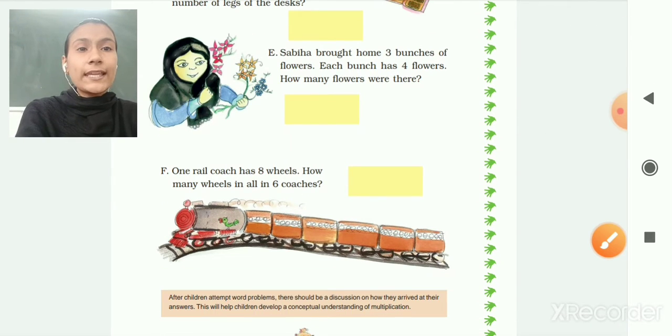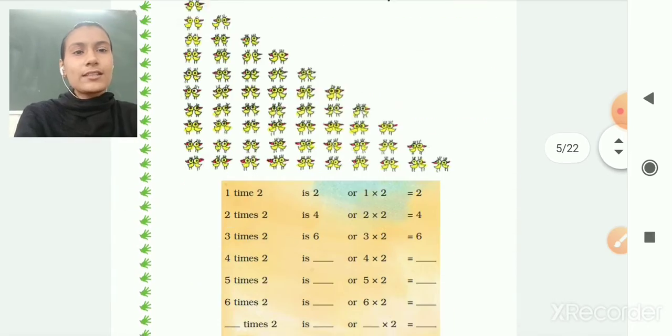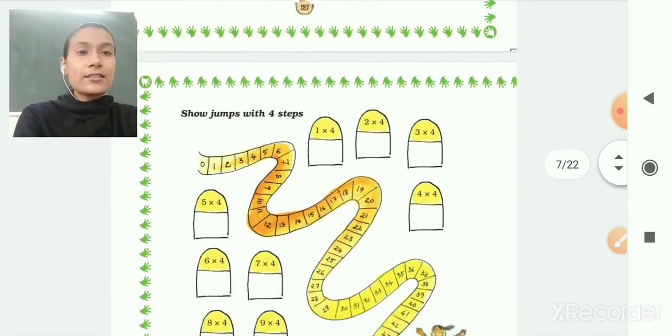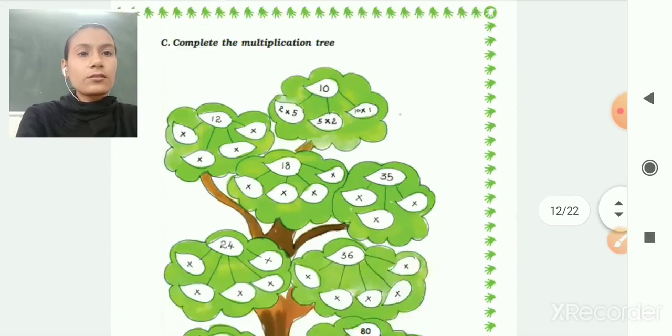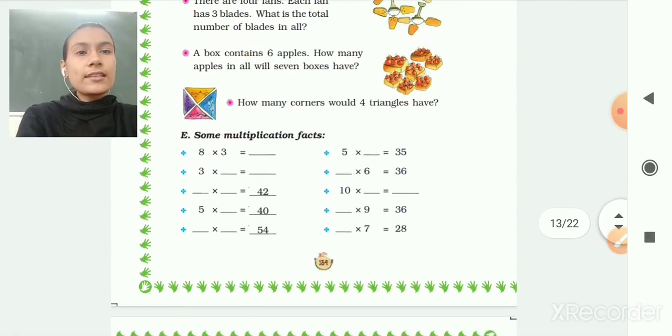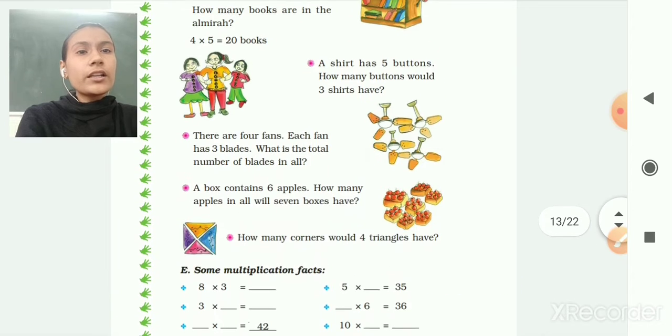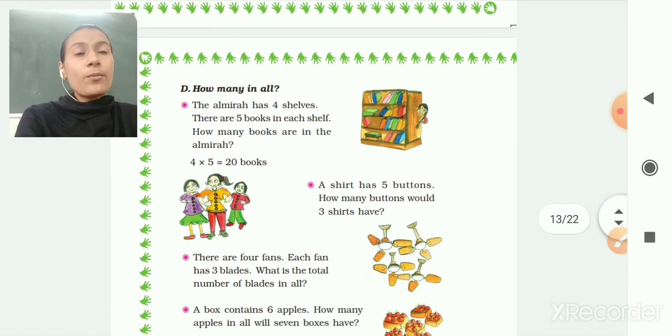Then one rail coach has 8 wheels. How many wheels in all 6 coaches? So this one is your homework. You have to practice at your home. Then next, solve the following.